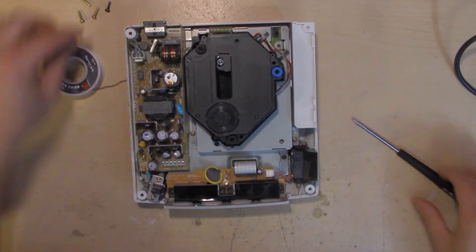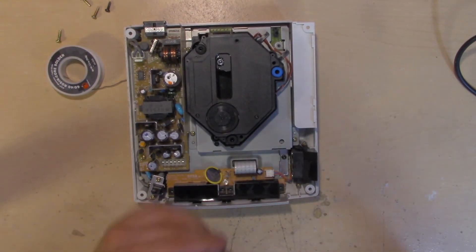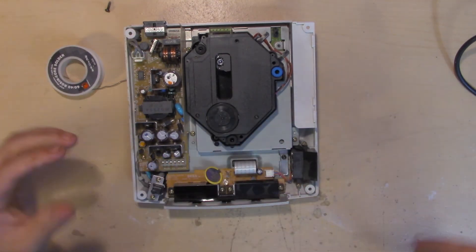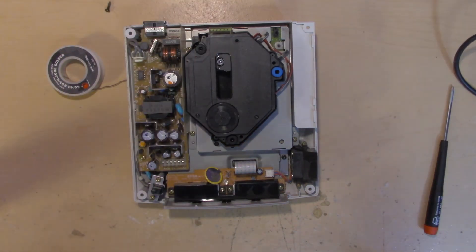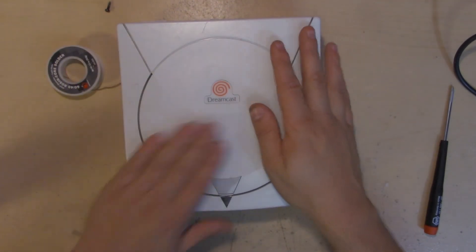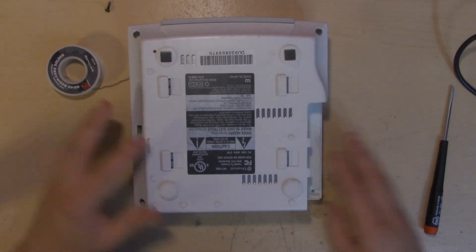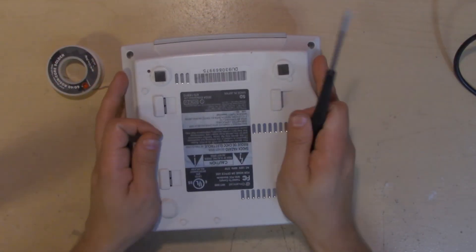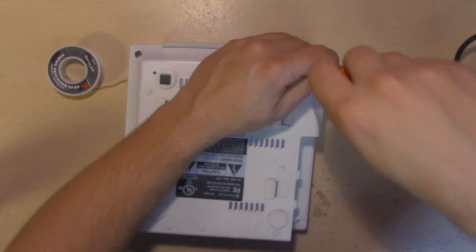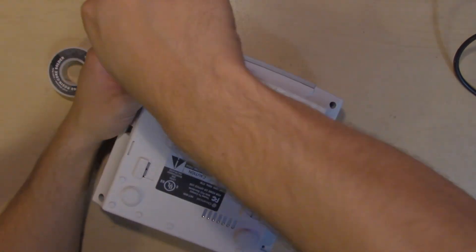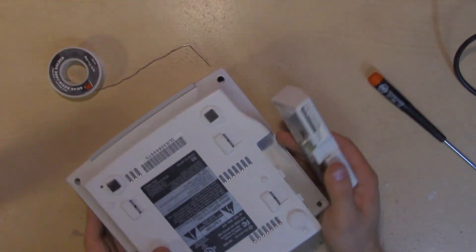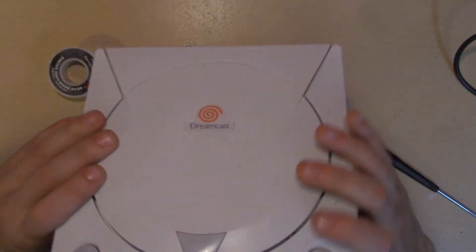And just put in those four golden screws. Slide the top back on. The Dreamcast is very jagged, so it's very boxy and square and lots of angles, so it's pretty easy to slide this all back into place and make it feel right. And finally put our last four screws back in. And the modem. And it's good as new.